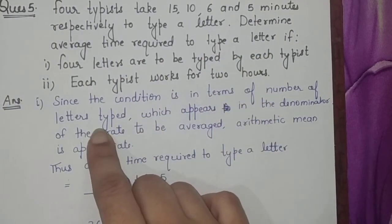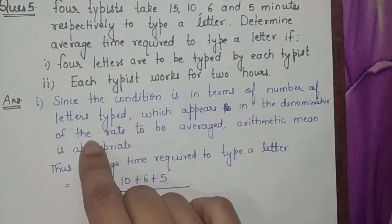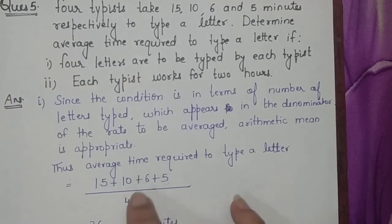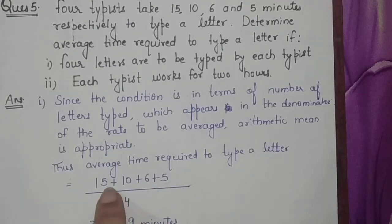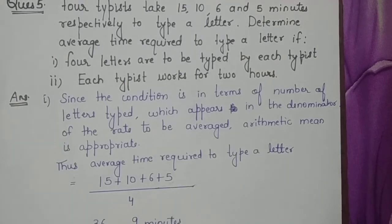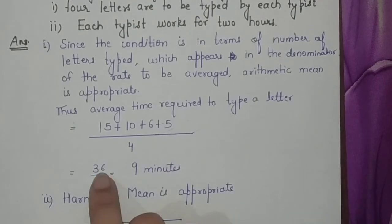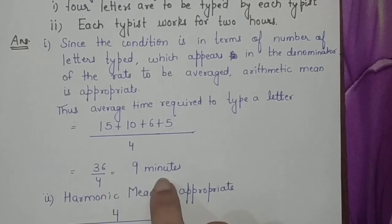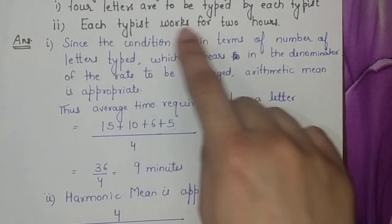In the first situation, four letters each typist types. Since the condition is in terms of number of letters to be typed, which appears in the denominator of the rate to be averaged, arithmetic mean is more appropriate. Four letters: one person takes 15 minutes, one takes 10 minutes, one takes 6 minutes, and one takes 5 minutes. So in total, four typists take 36 minutes and four letters have to be typed, so average time to type one letter is 9 minutes.